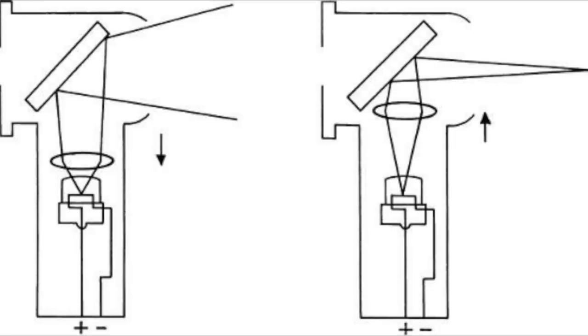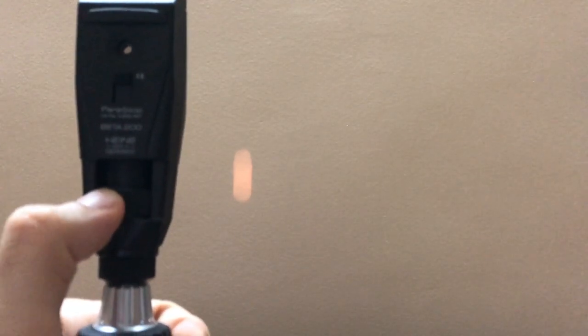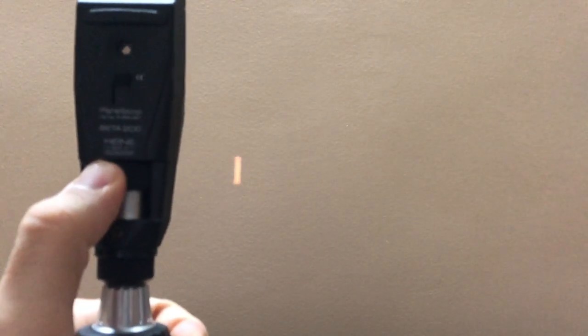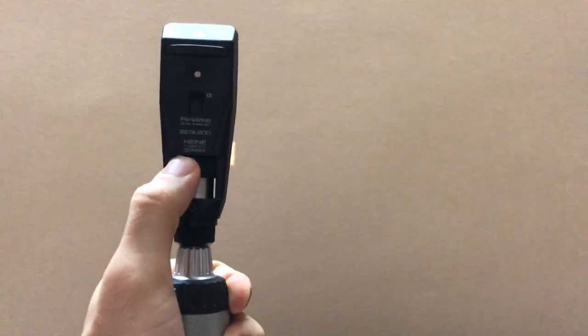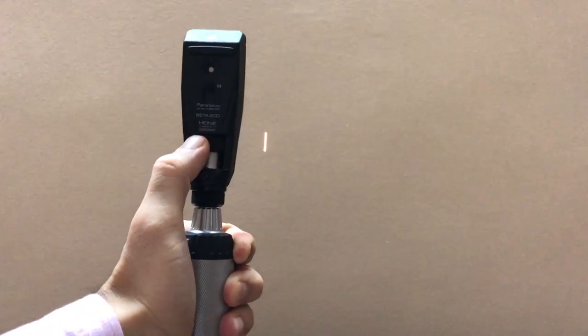With the touch of a finger or thumb, the practitioner can alter the streak so that it leaves the retinoscope as converging, diverging, or even parallel light. This feature gives the practitioner an incredible amount of power in evaluating a patient's refractive state. The lowest position gives a divergent beam; the highest position converges the streak at a distance of 25 centimeters in front of the retinoscope.